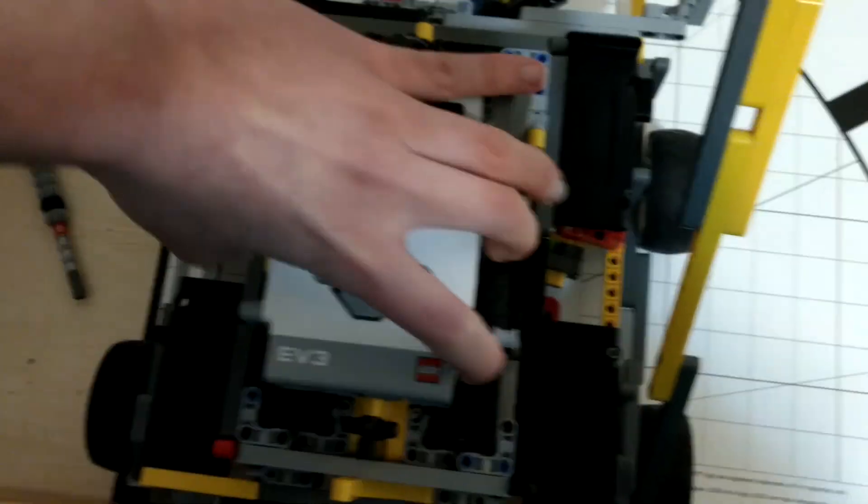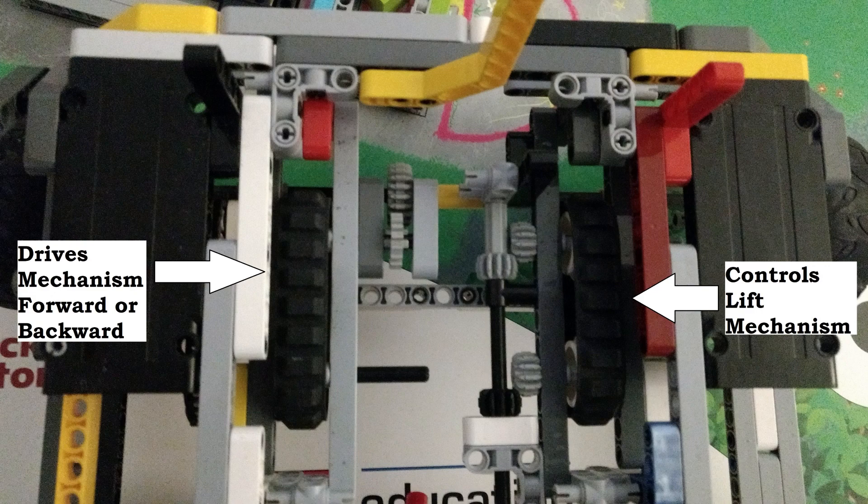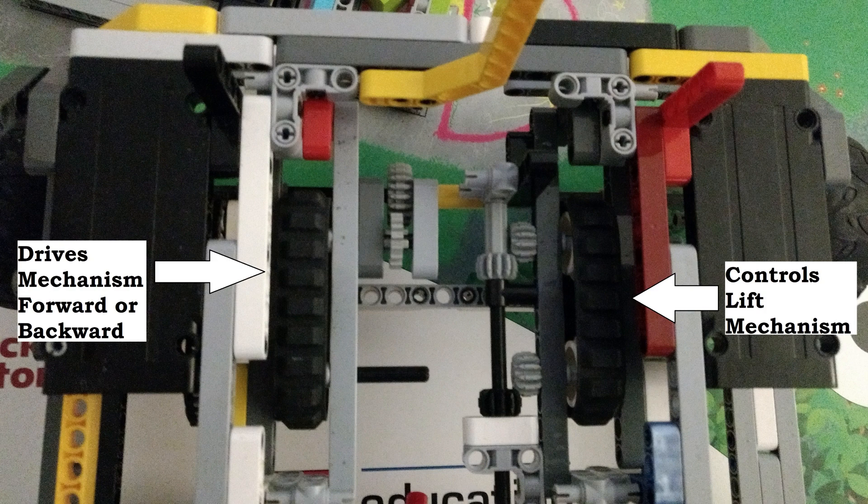Before we start running the program, I put the robot on top of the attachment. There are two treads that the wheels of the robot actually contact, which both control the robot's crane and drive the robot both forward and backwards.